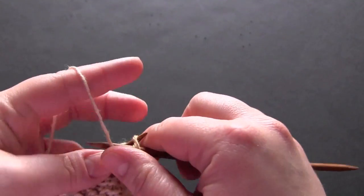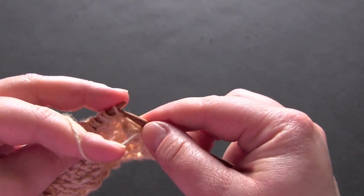So for row two, you're just going to purl all of your stitches.